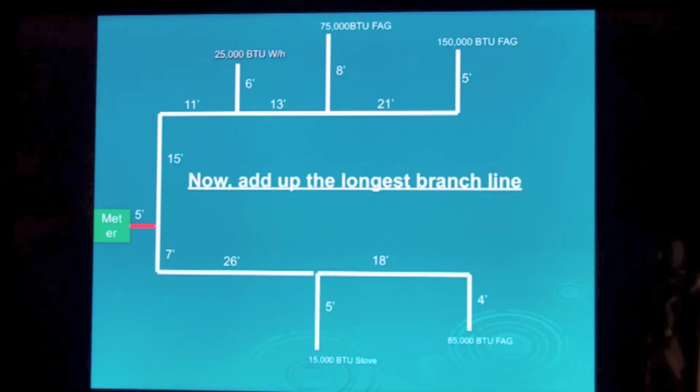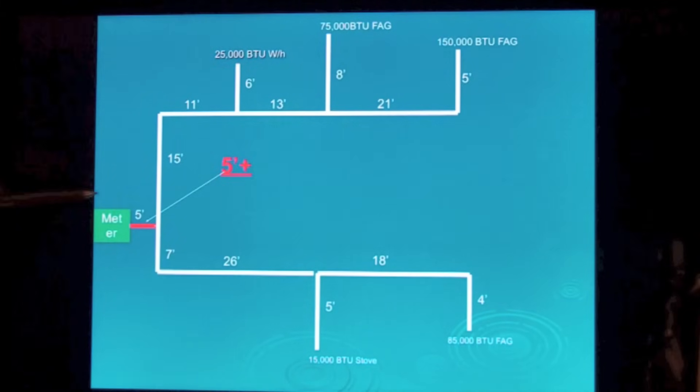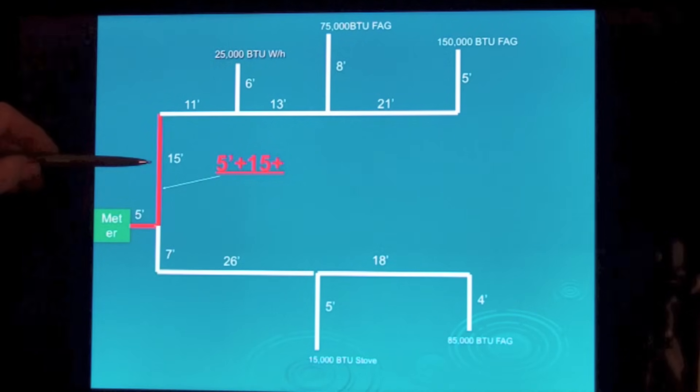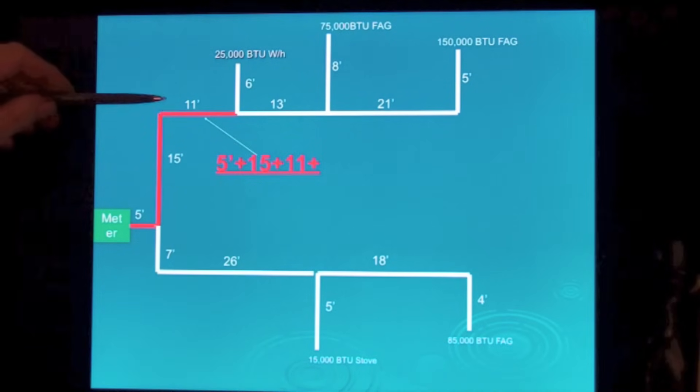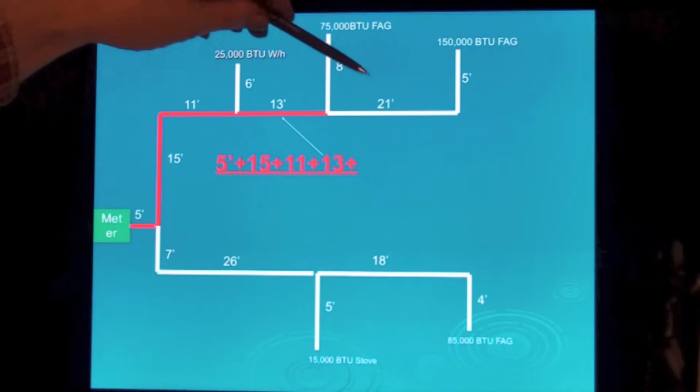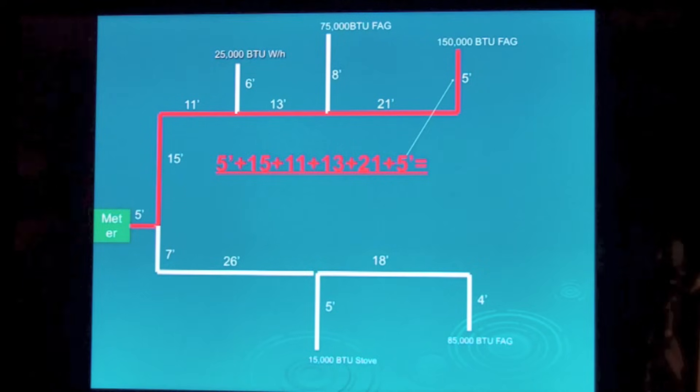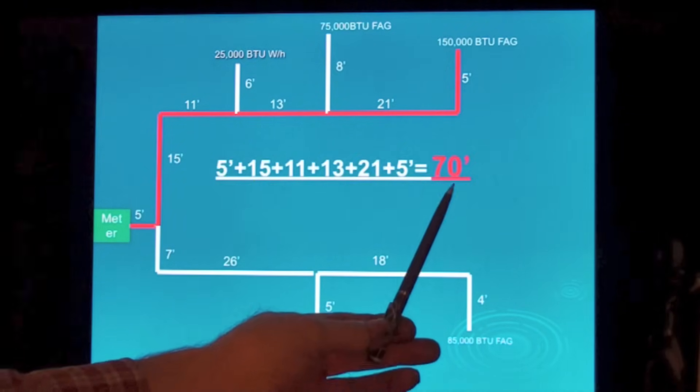Now we're going to add up the longest branch line. This is the International Fuel Gas Code method. It may not always seem to make sense but it does actually work pretty good. So let's find the longest branch line. Take the five foot, add fifteen foot for this upper branch, eleven foot, thirteen foot, twenty one foot, and five foot. That's going to equal seventy feet.